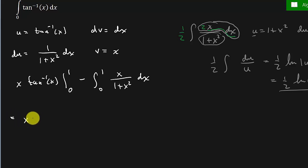All right, so now that's going to give me x times inverse tangent x from 0 to 1 minus, okay, so minus this. So it's going to be 1 half natural log 1 plus x squared, and that's from 0 to 1.